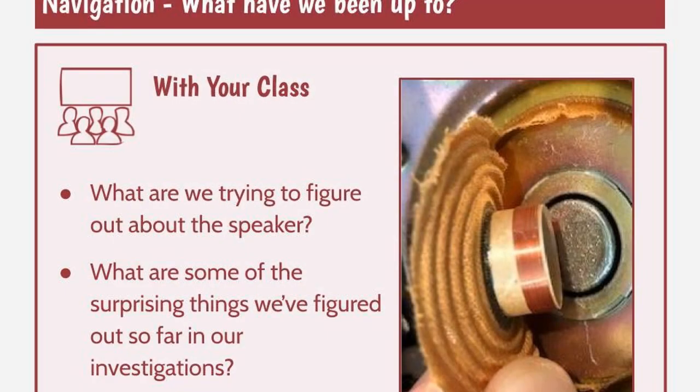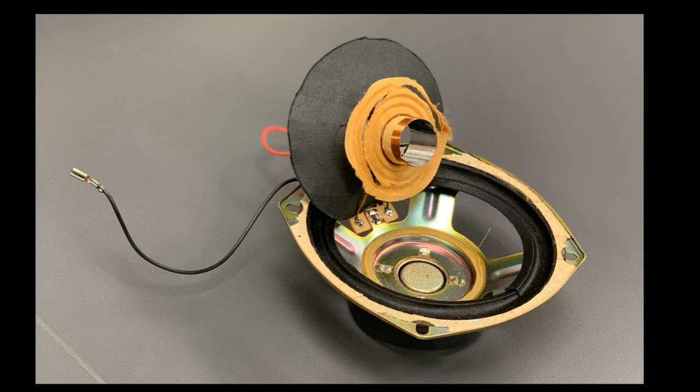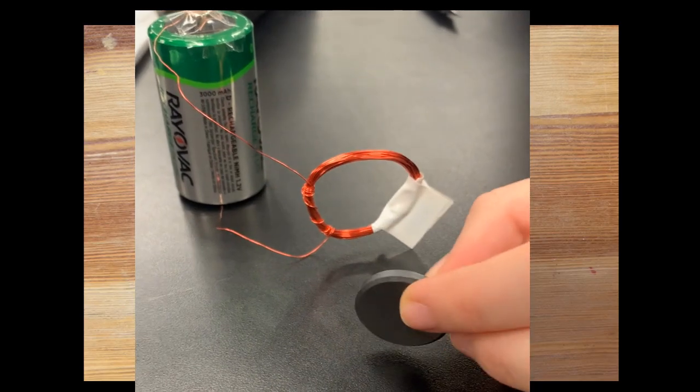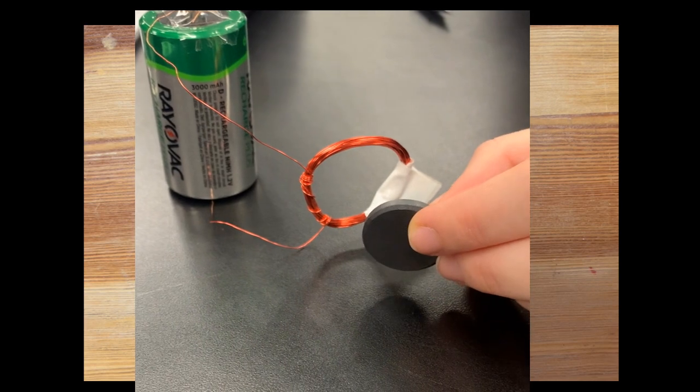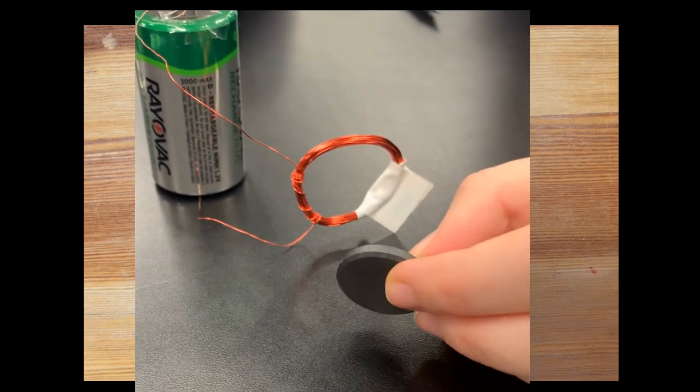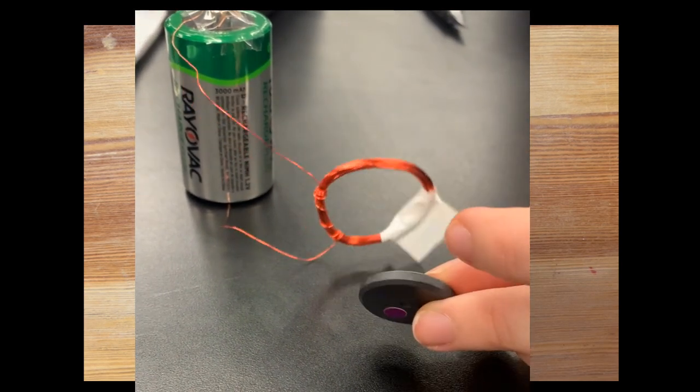We've been thinking what makes a speaker vibrate. We noticed when we took apart a speaker that there was a magnet and a copper coil. We did a lot of investigations and figured out that there was some interaction happening between the magnet and the copper coil that resulted in the vibration of the speaker.